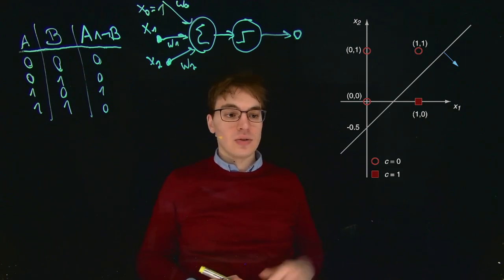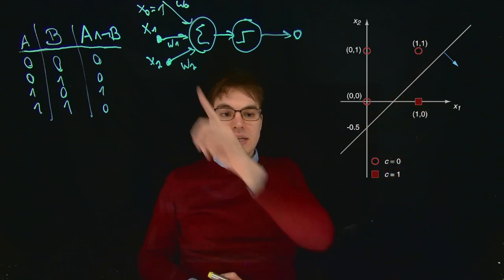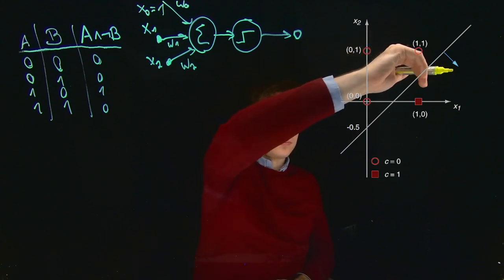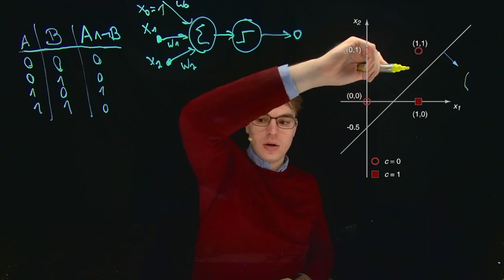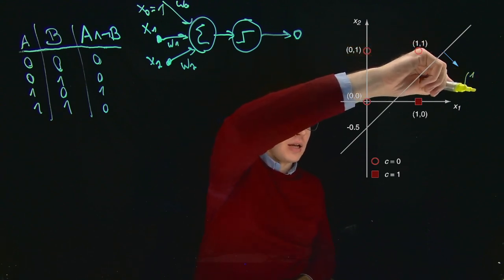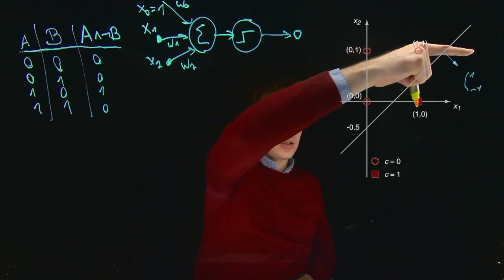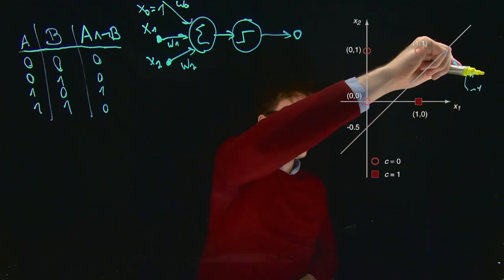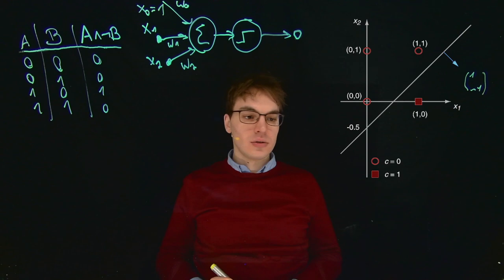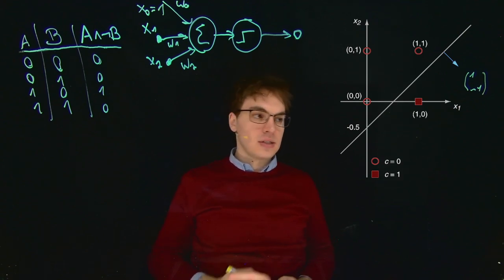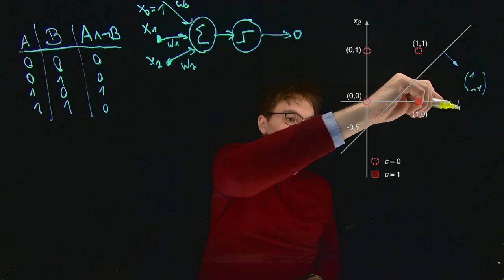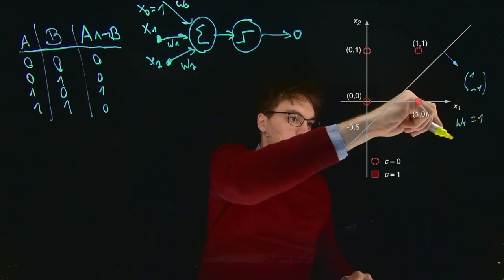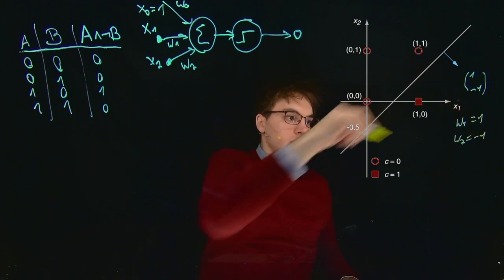The next step now is to express this decision boundary through these weights. What we can see is that we have a normal vector which goes in the direction of 1 minus 1, so 1 in that direction and minus 1 in that direction. This is our normal vector and this already gives us our weights W1 equals 1 and W2 equals minus 1.